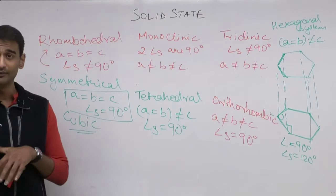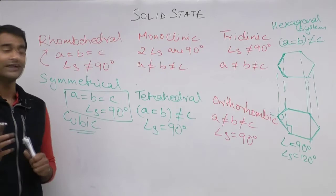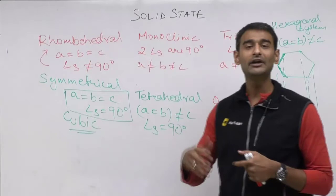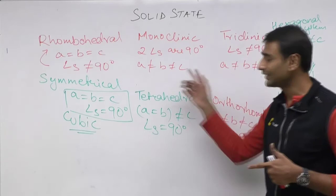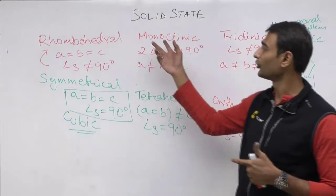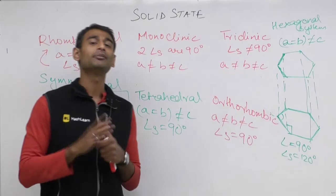There are 7 crystal systems but 14 types of Bravais lattice. This is because each system can have variations: cubic has three variations — simple, body-centered, and face-centered. Tetragonal has two variations. Orthorhombic has four variations: body-centered, face-centered, edge-centered, and simple. These variations within each system give us the 14 Bravais lattices.